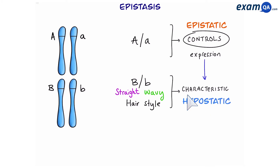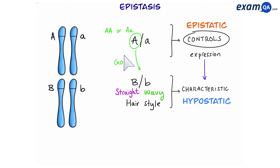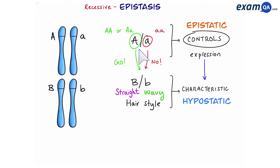Gene A has two versions: big A and small a. The dominant version of gene A — meaning you can have two big A's or a big A and small a — will promote the expression of the next gene. However, having two small a's in the genotype will prevent the expression of the next gene. Because the recessive version of gene A is preventing or masking gene B, we say that this is recessive epistasis.